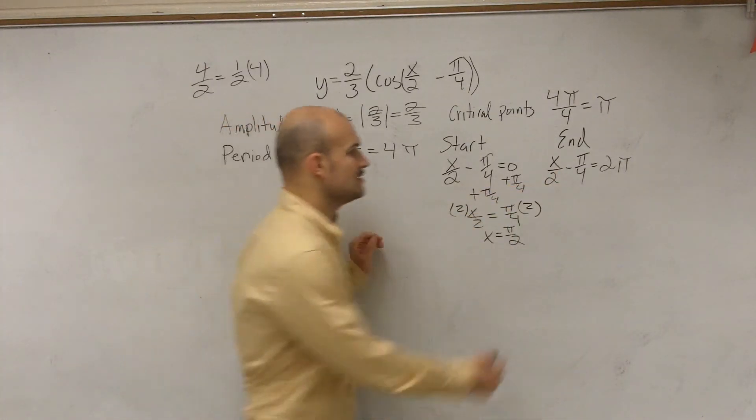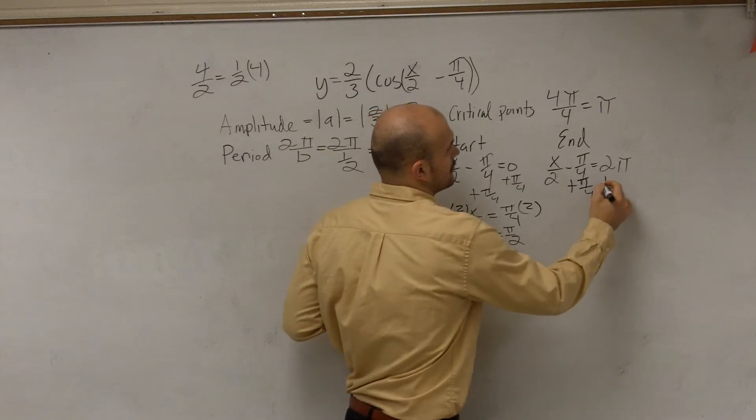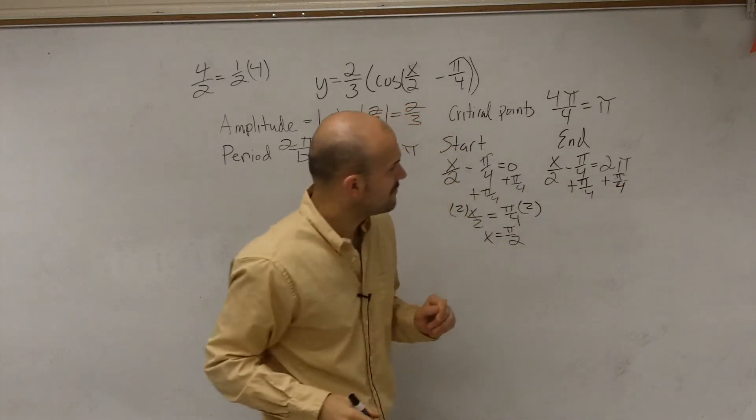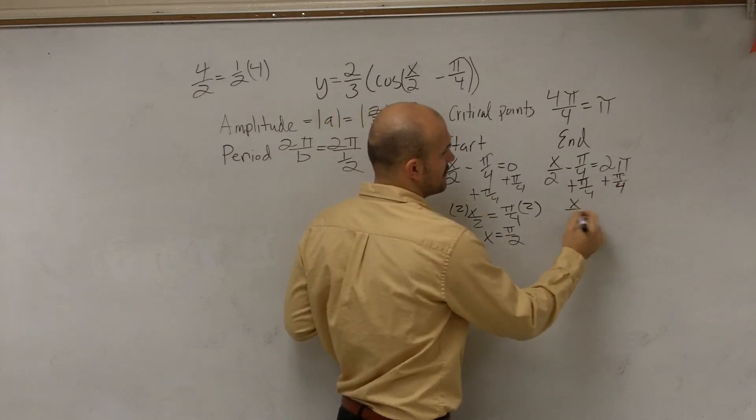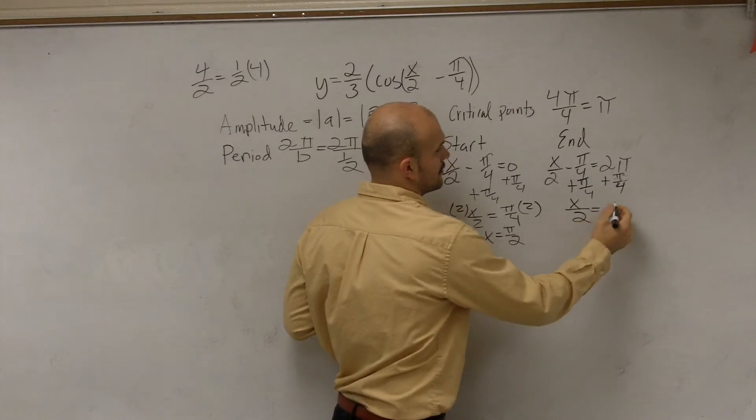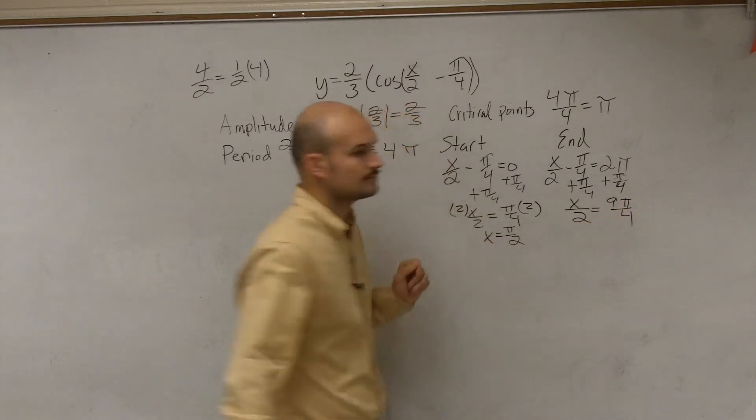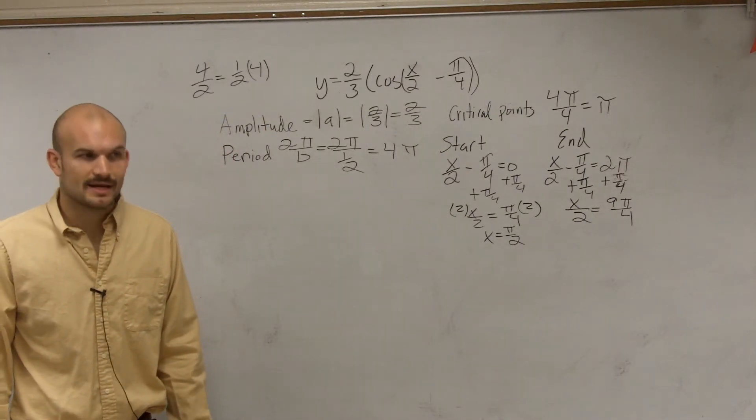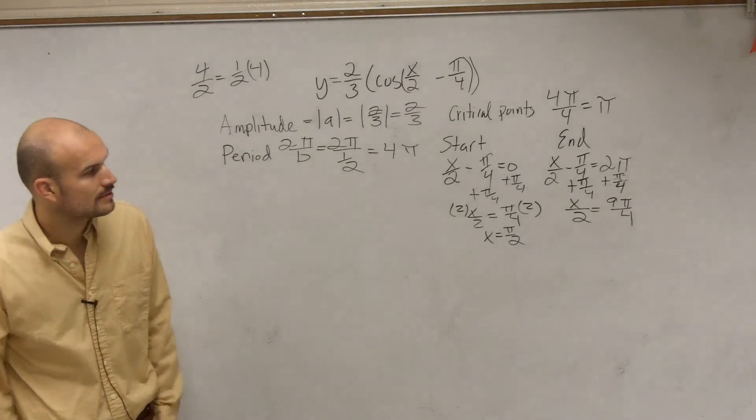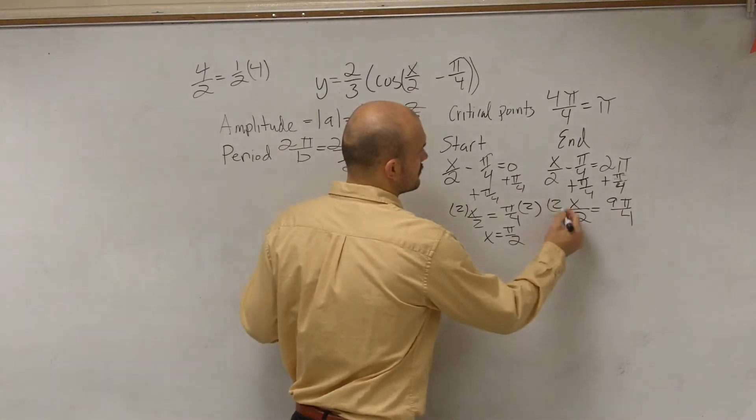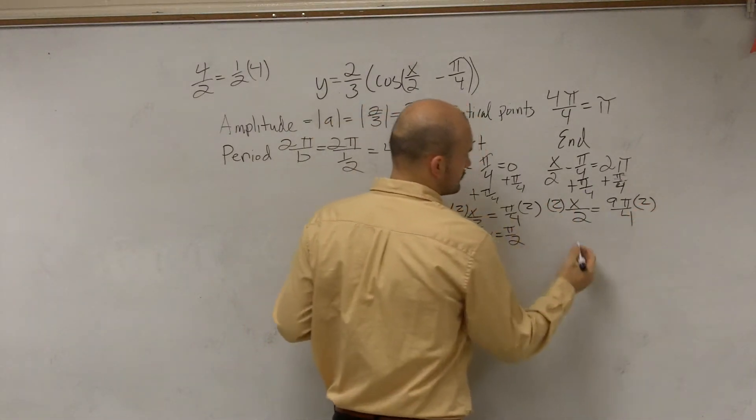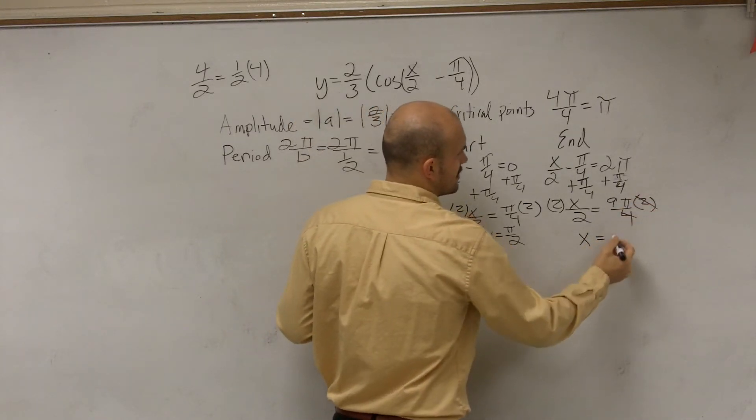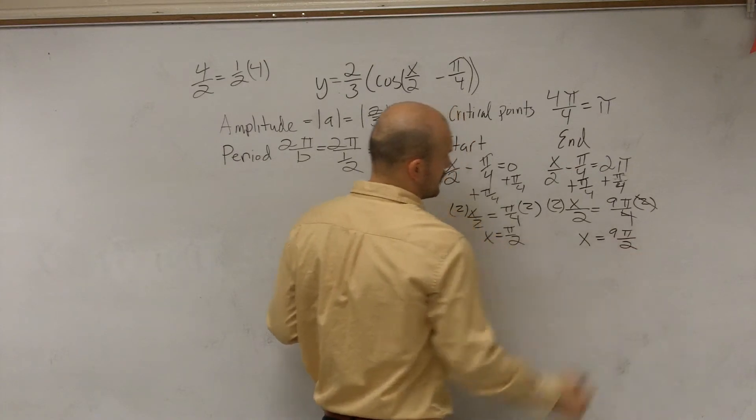Then I solve for x over here, so I add pi over 4, so that would be 8 pi over 4, so therefore I'm going to get 9 pi over 4. Because 2 pi is the same thing as 8 pi over 4. So if you add an extra pi over 4, then you're going to have 9 pi over 4. Then I multiply by 2 on both sides. And then we can kind of simplify this. So you get 9 pi over 2.